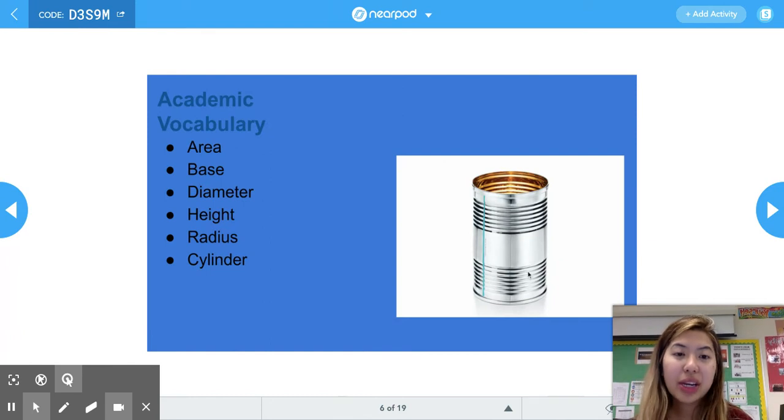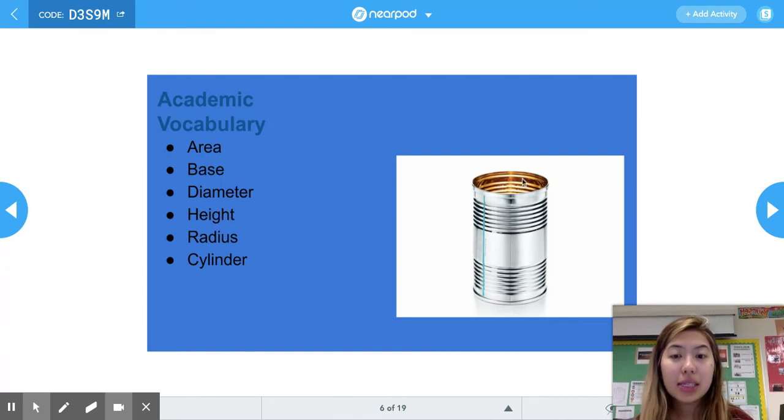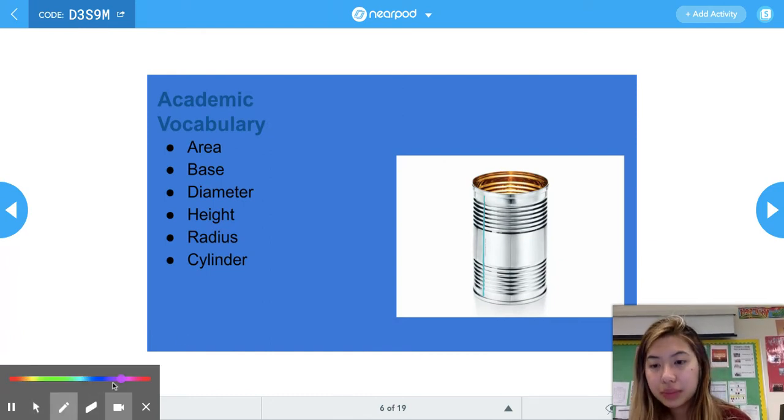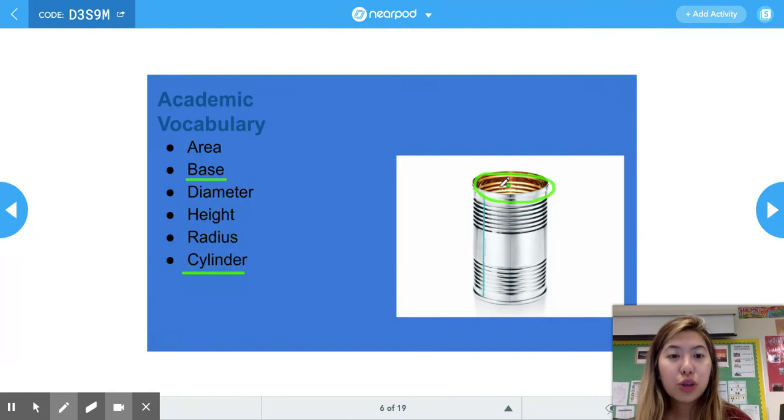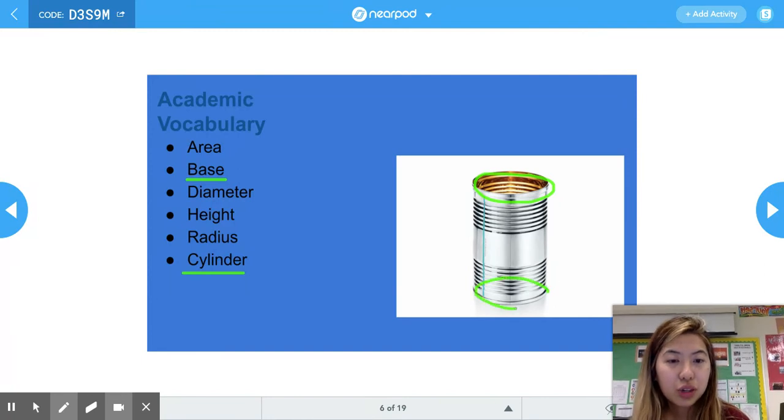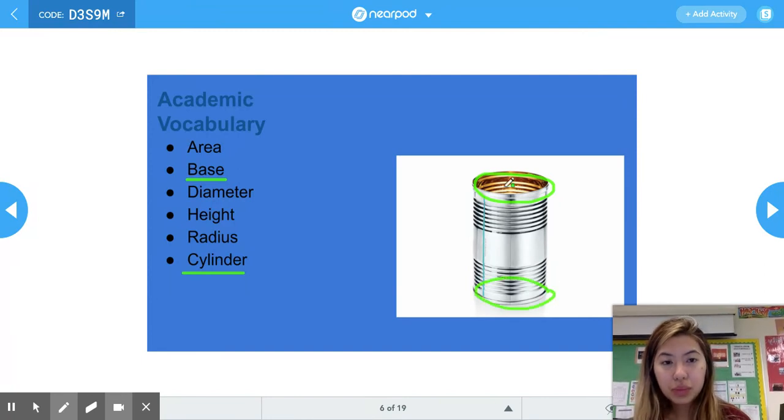So this tin can is in the shape of a cylinder. As you can see, the base of the cylinder is a circle. There's usually two bases - the top circle, but also the bottom circle. To find the volume or how much water or beans we can fit into this tin can, we're first going to have to find the area of the base.